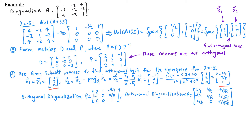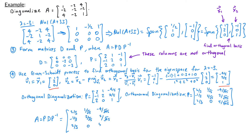So writing A equals PDP transpose, we have P equal to the matrix with columns 2 thirds, negative 1 third, 2 thirds; 1 over root 5, 2 over root 5, 0; and negative 4 over root 45, 2 over root 45, 5 over root 45; times the diagonal matrix with entries 6, 0, 0, 0, negative 3, 0, 0, 0, negative 3.